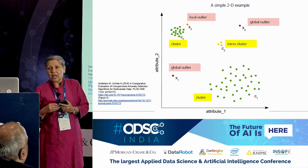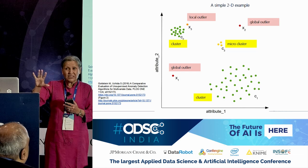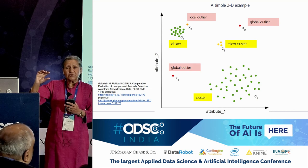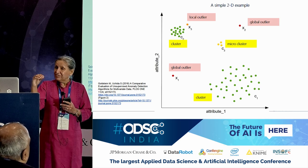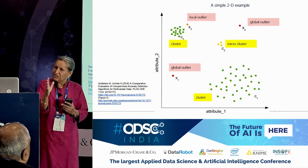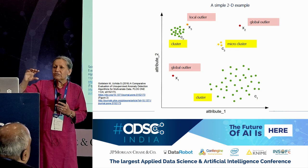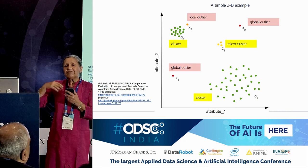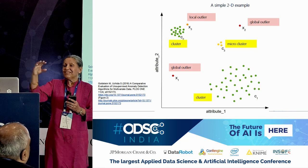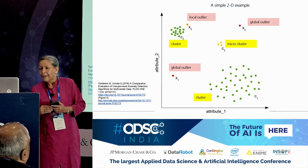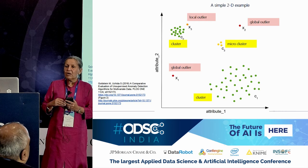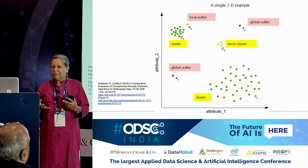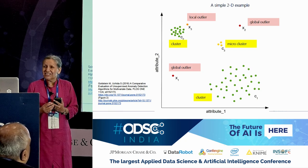For time series data there are established methods — algorithms that can take a time series and separate out its various components: weekly variation, daily variation (less usage at night, more in daytime), even seasonal quarterly fluctuations. After all of that is removed, you can see if there's a real anomaly. So yes, anomaly detection is very typically applied to time series, and any data you collect on an ongoing basis you can run anomaly detection algorithms on.